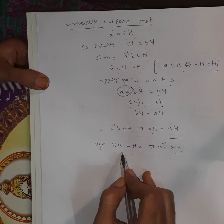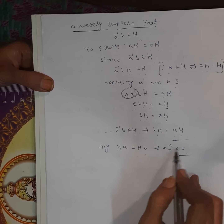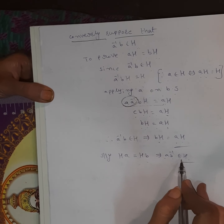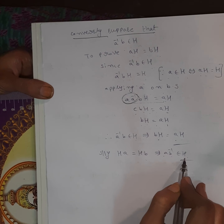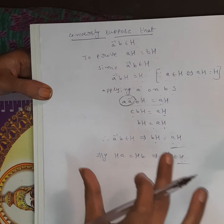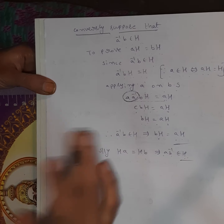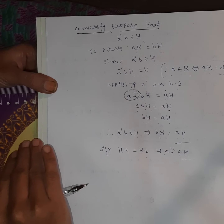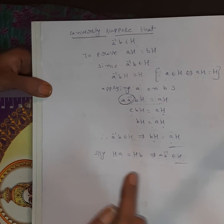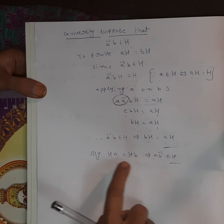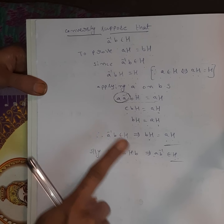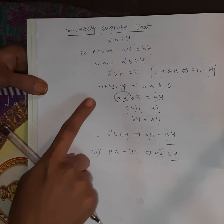Similarly, HA equals HB implies AB⁻¹ belongs to H, using the same conditions. Both directions have been proved, completing the if-and-only-if proof. This completes the first theorem, which is an important exam question.